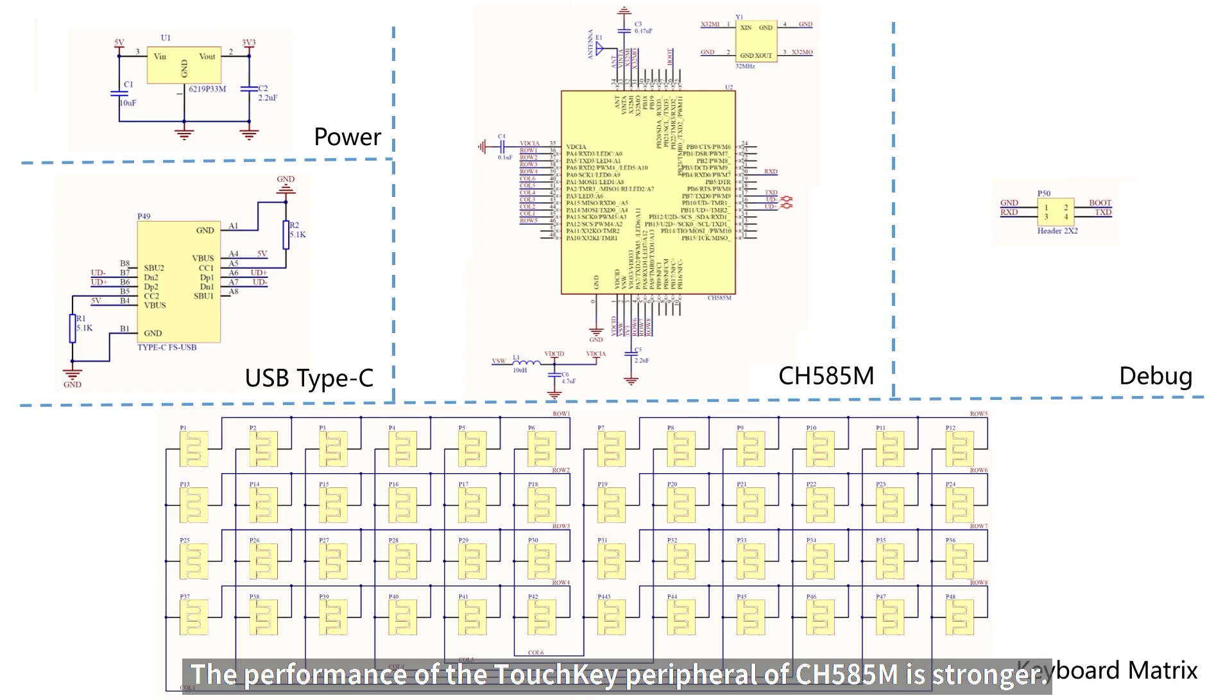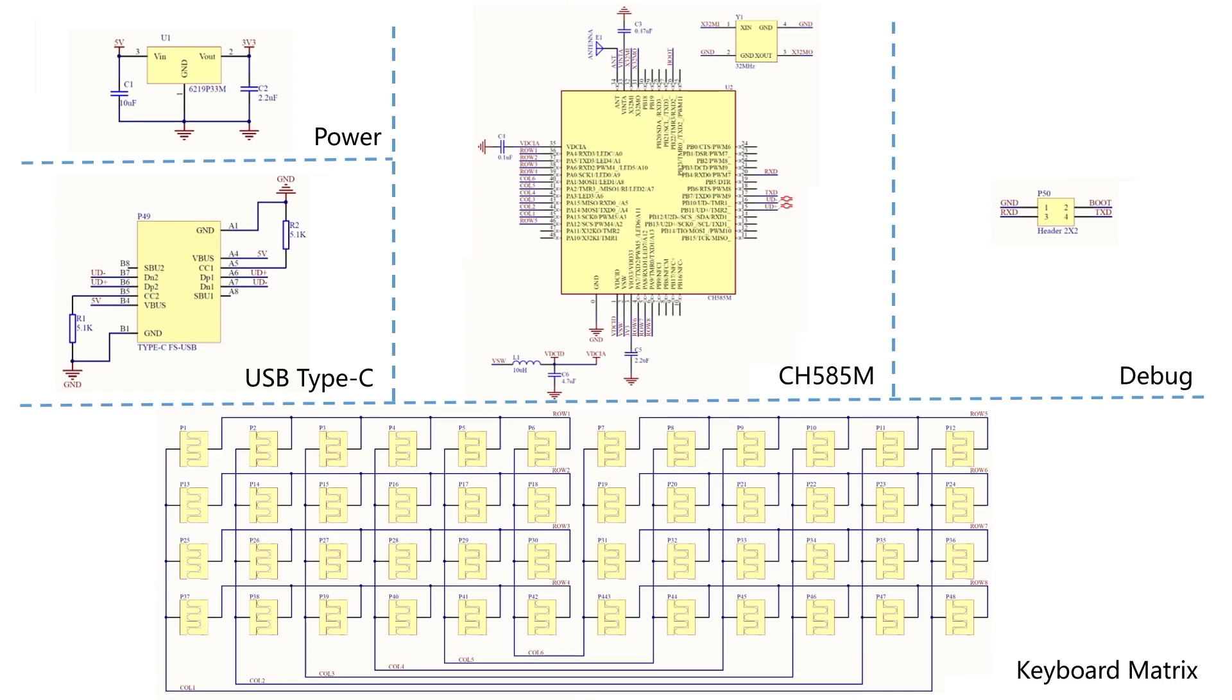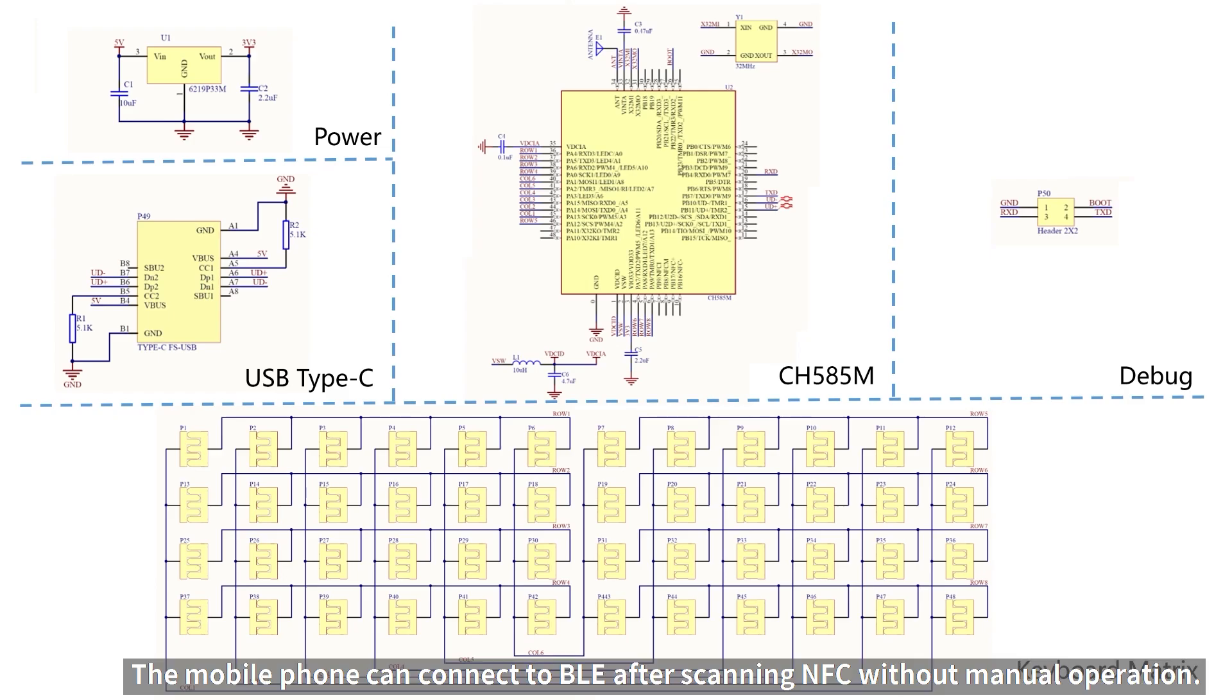The performance of touch key peripheral of CH5A5M is stronger. It supports high-speed USB and NFC. High-speed USB is not used in this solution. The future upgrade plan plans to add NFC circuit. The mobile phone can connect to BLE after scanning NFC without manual operation.